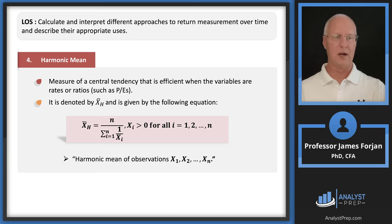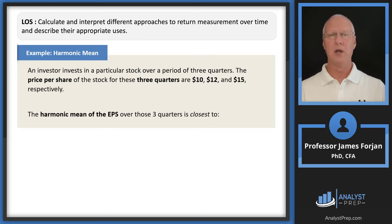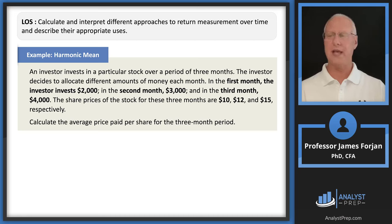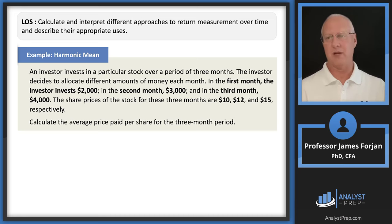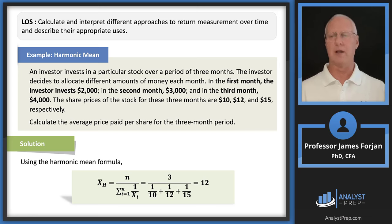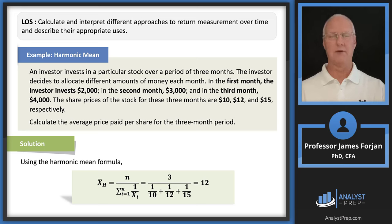Here's a harmonic mean example: we allocate capital over three months with share prices of $10, $12, and $15. What is the average price paid per share? Rather than the arithmetic mean of (10 + 12 + 15) / 3, the harmonic mean is 3 / (1/10 + 1/12 + 1/15) = 12. Remember: the harmonic mean is useful for ratios like PE ratios and for allocation of different amounts of capital over a time period.